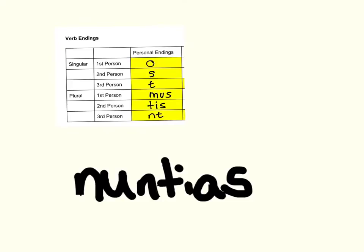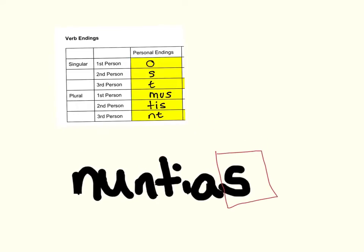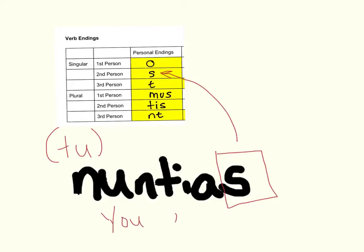Next example: nuntias. First thing we're going to do is isolate that ending — we're going to draw our box around it. S. S is second person, so that's you, and it's only one you, because it's singular. The Latin pronoun for that is understood to be tu. So tu nuntias means you, singular, announce.